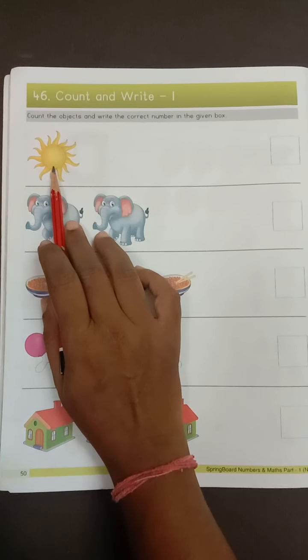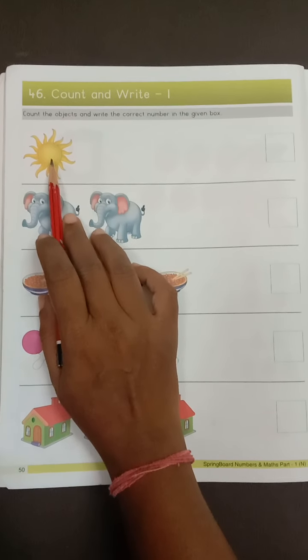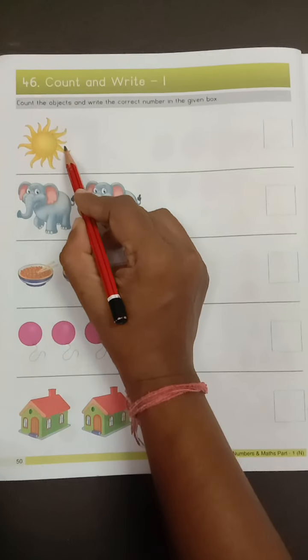First, which picture is this? Yes, this is sun. So how many sun? Count. One. Only one sun. How many sun? One.